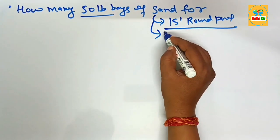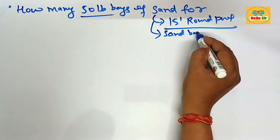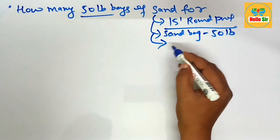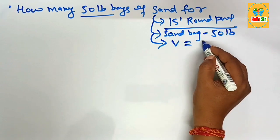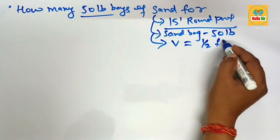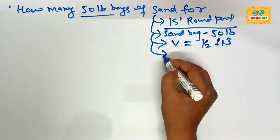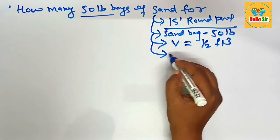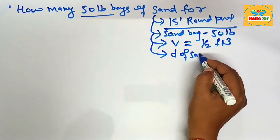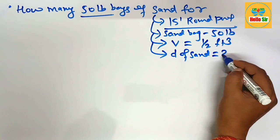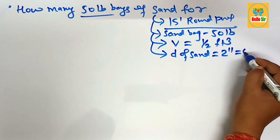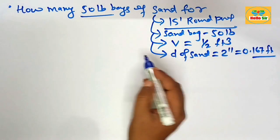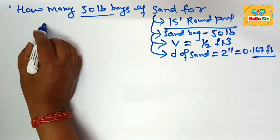The sand bag comes in 50 pounds and each bag yields a volume of about half a cubic foot. The minimum depth of sand required for a swimming pool is about 2 inches, which equals 0.167 foot.